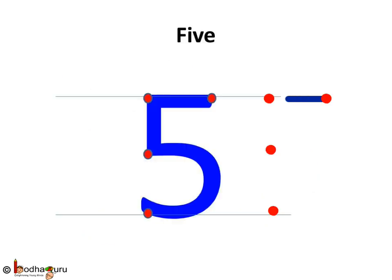So, 5 is a sleeping line, then a standing line and then a curve facing back. Look, number 5 is ready. Let us see.